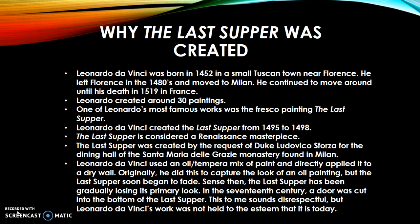The Last Supper was commissioned for the dining hall of the Santa Maria delle Grazie monastery in Milan. Leonardo da Vinci used an oil-tempera mix of paint and directly applied it to the dry wall. He did this to capture the look of an oil painting, but the Last Supper soon began to fade. Since then, the Last Supper has been gradually losing its original appearance. In the 17th century, a door was cut into the bottom of the Last Supper.